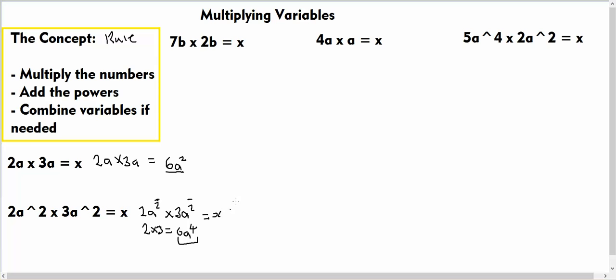Now if we go up to this equation at the very top, we have 7b multiplied by 2b, and again this is pretty straightforward. We look at our concept again and multiply the numbers first, so 7 multiplied by 2 we know is 14. And if we add the powers, 1b plus 1b is equal to 2b, so our answer is 14b².